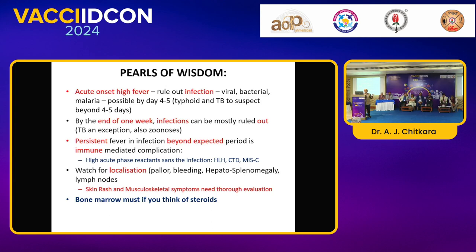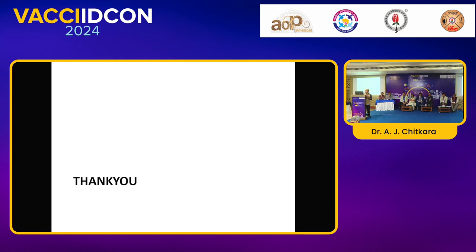Here you will find, as I gave the message earlier, high inflammatory markers and negative infection markers. Throughout your exercise, please keep looking for localization — because pallor, bleeding, hepatosplenomegaly, and lymphadenopathy start giving a clue toward hematological disorders; never miss that. Musculoskeletal systems — remember Vijay Vishwanathan, but at the same time remember Brucella, Leptospira, and sometimes even influenza. Bone marrow: if you think you need to start steroids, that would be all from me. Thank you friends.